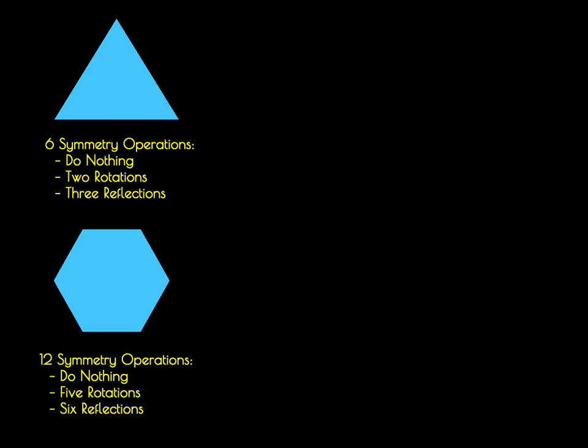We can compare that equilateral triangle to a hexagon and ask how much more symmetric is one object relative to another. Just looking at these, we inherently know that that hexagon has a higher symmetry than that equilateral triangle. But going through and counting up symmetry operations, we can quantify this. As we said, that equilateral triangle has 6 symmetry operations that can be performed on it. The do nothing operation, 2 rotations, and 3 reflections. The hexagon has 12 symmetry operations that can be performed on it. The do nothing operation, 5 rotations, and 6 reflections. Therefore, we can say that the hexagon is a higher symmetry object than the triangle.